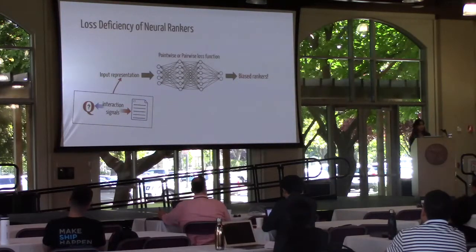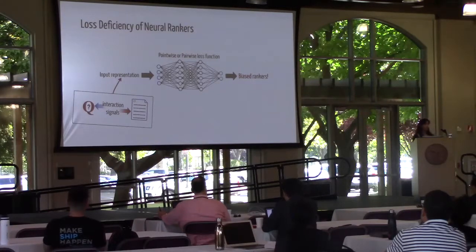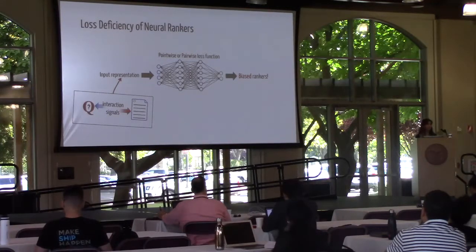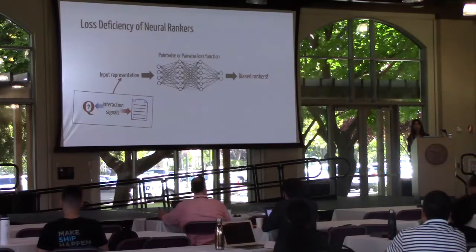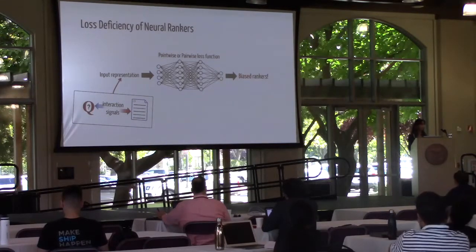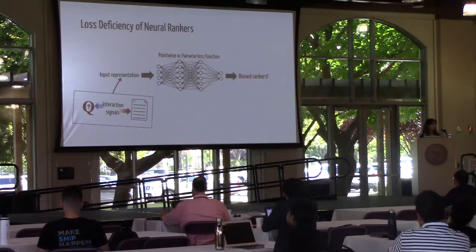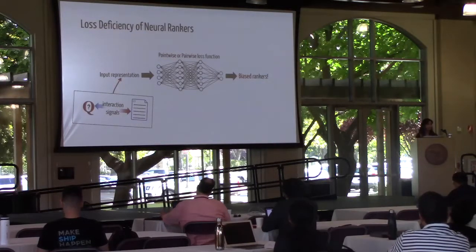There are some neural models whose input is based on query-document interaction signals, like interaction matrices or histograms representing the frequency of query terms in documents, or the position of query terms in documents. These models are called early interaction neural models.